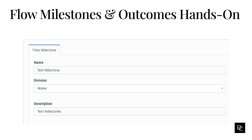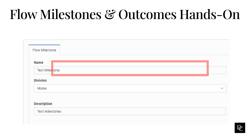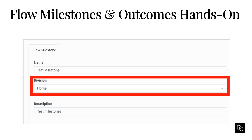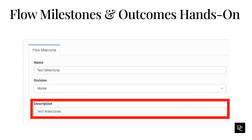Let's create a flow milestone. Click Flow Milestones under Architect and click the plus button. Type a descriptive name for the milestone — for example, Check Balance. Choose which division to put the milestone in; Home is the default. Add a more detailed description of the milestone, then click Save.